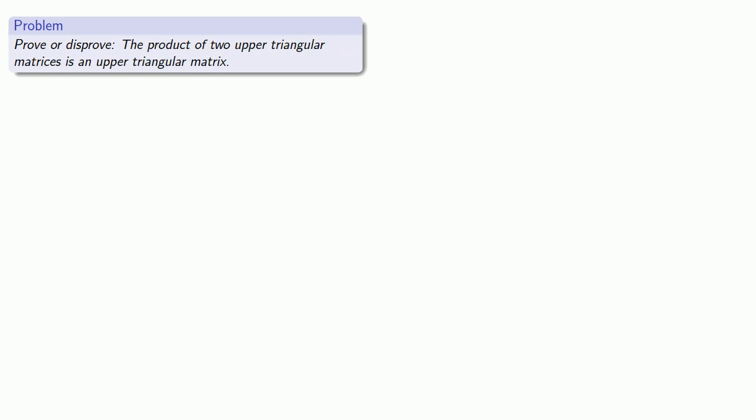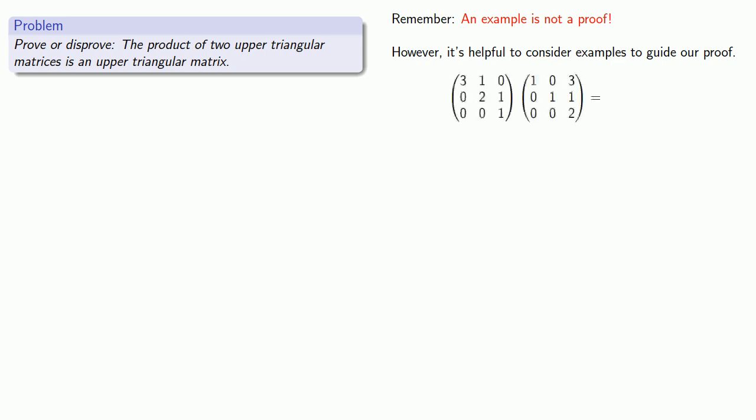How about the product of two upper triangular matrices? It's vitally important to remember that an example is not a proof. However, it's helpful to consider examples to guide our proof. So let's take two upper triangular matrices and multiply them together. And if we do that, we see that we do actually get an upper triangular matrix. So this suggests that our statement might actually be true and be worth trying to prove.